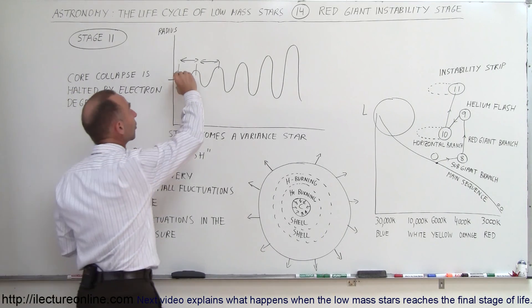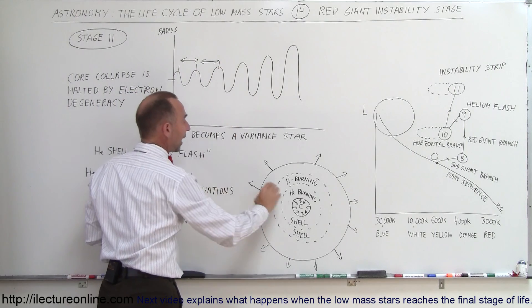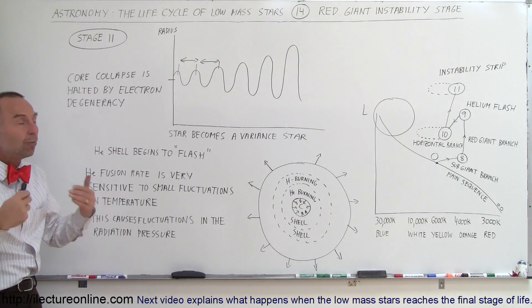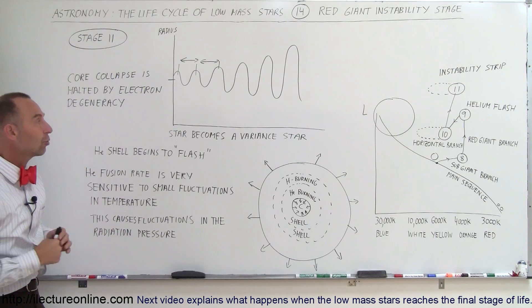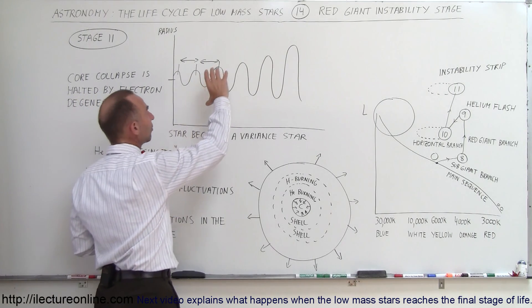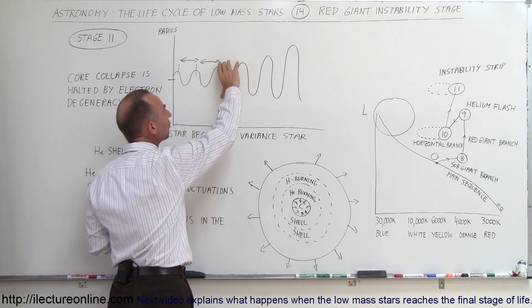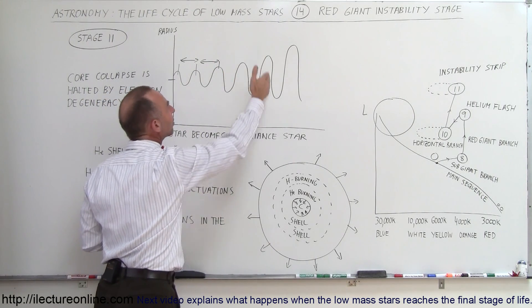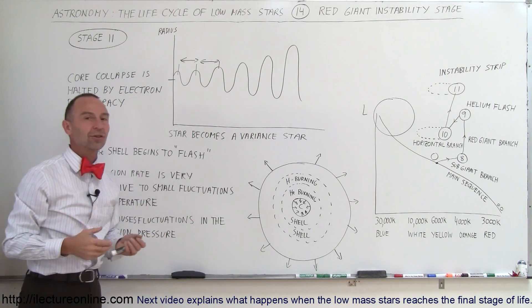Also notice that over time, the fluctuations become more violent. As the changes in the temperature of the helium burning process vary more, it causes greater fluctuations in temperature, causing greater fluctuations in the radiation, and causes greater changes in the radius and therefore the luminosity.